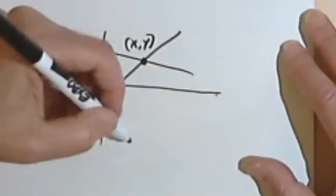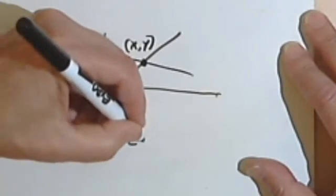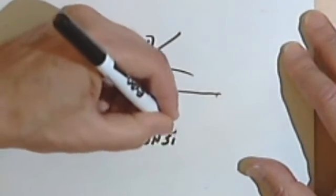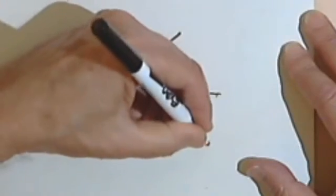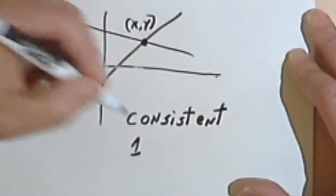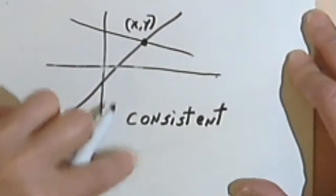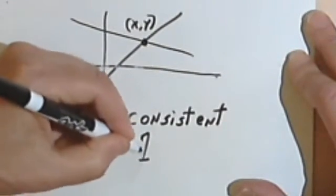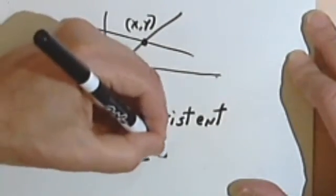Equations that do this are called consistent, consistent equations, and they're going to have one solution.